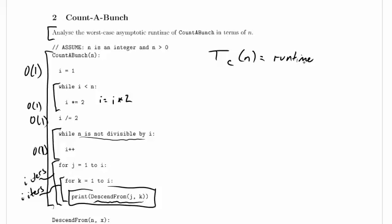But the runtime of count a bunch on an input of size n. That's usually what we'd write, but actually in this case we're not really doing of size n, we're just saying on input n. So that's the runtime of count a bunch on input n, and we're working on building up that function and giving an asymptotic bound on it.